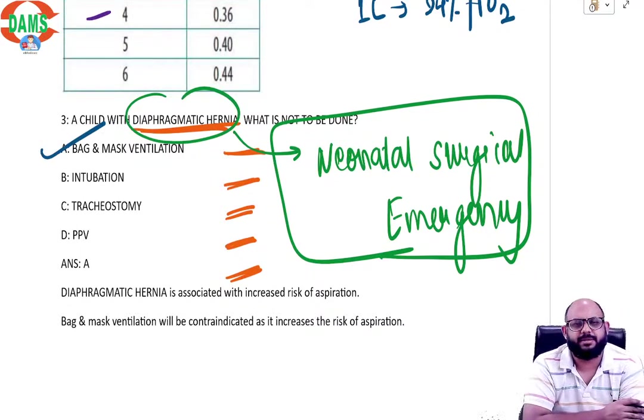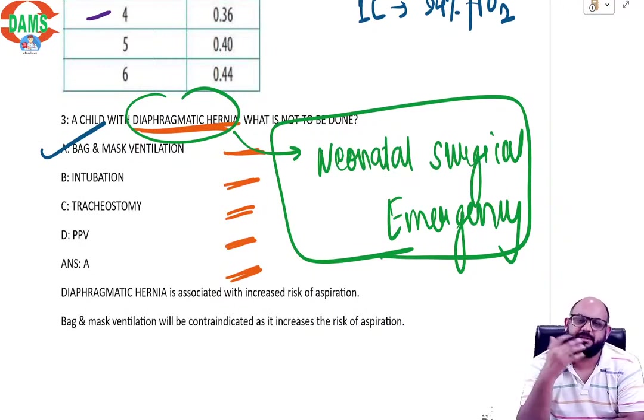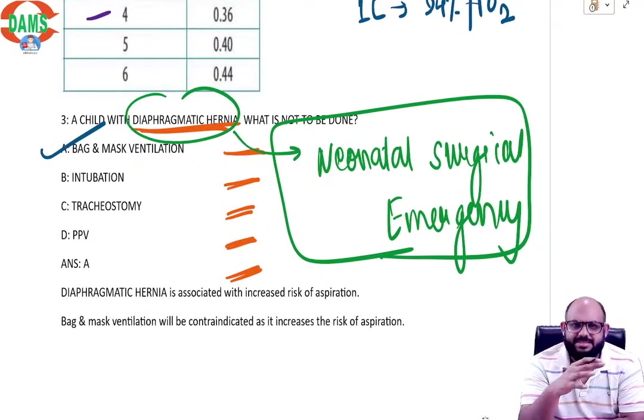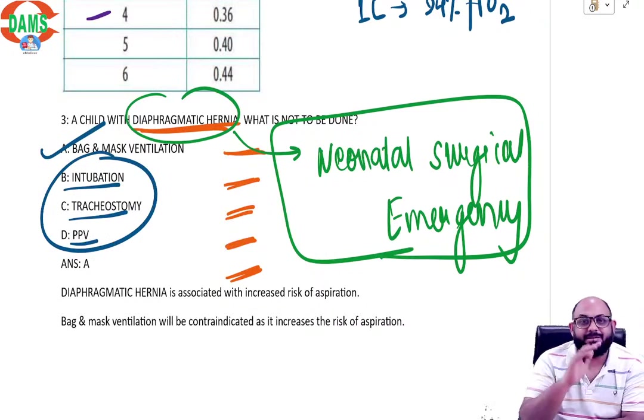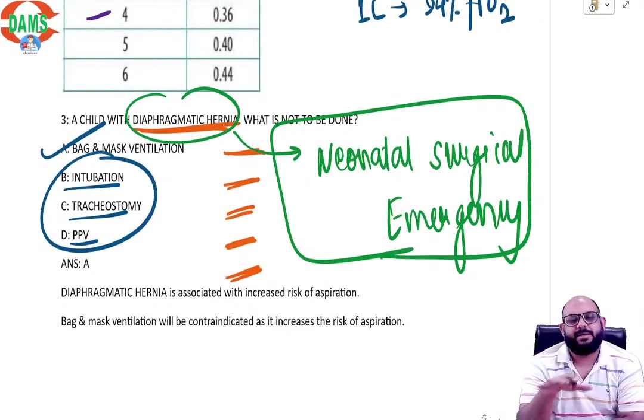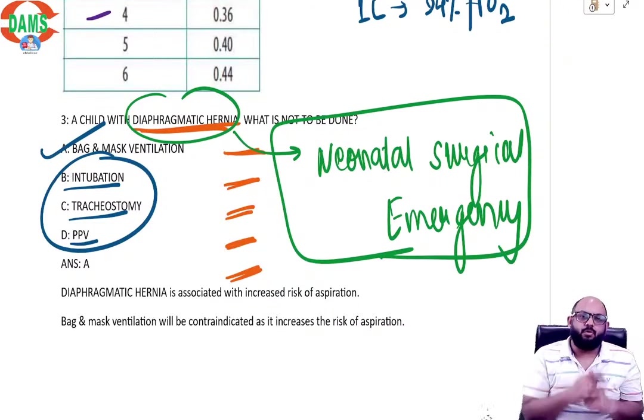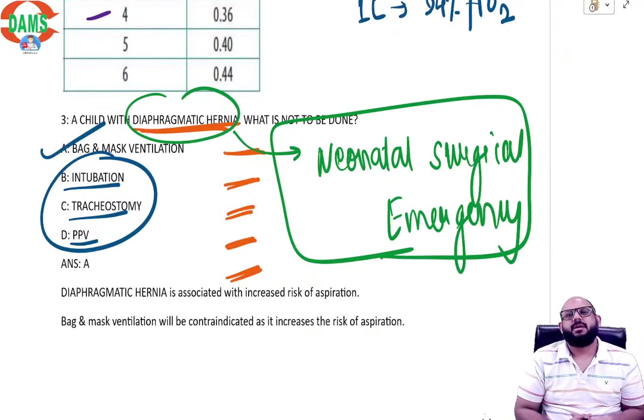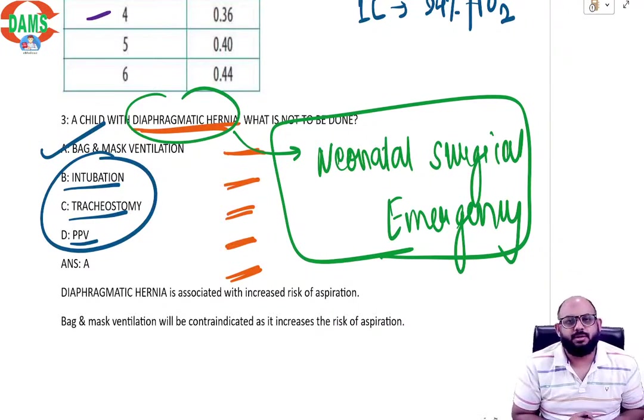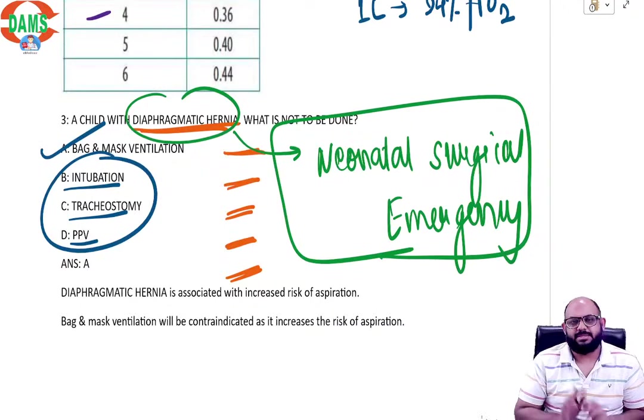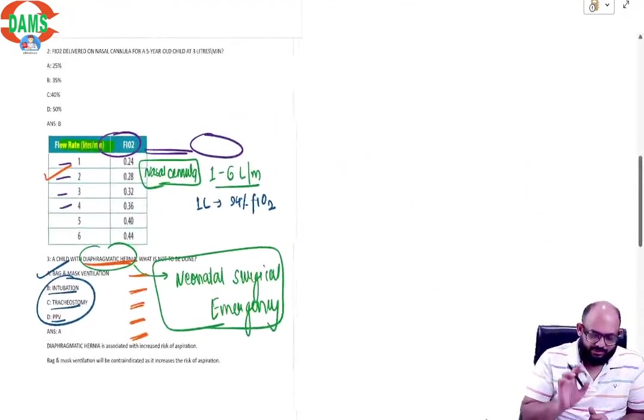One thing that you're not going to do is bag and mask ventilation because bag and mask ventilation will inflate the volume of the stomach. The patient is already at a high risk of aspiration, as well as in diaphragmatic hernia. When there is inflation of the intestine, it compresses the lung, which further exacerbates the condition. Intubation, tracheostomy, PPV, all three are the things that you will actually do in a patient of diaphragmatic hernia without bag mask ventilation, so that you can keep ventilating the patient to keep the patient oxygenated because a part of the lung or sometimes even one whole lung is compressed by the intestines that have herniated into the mediastinum. So what you will not do is bag and mask ventilation.